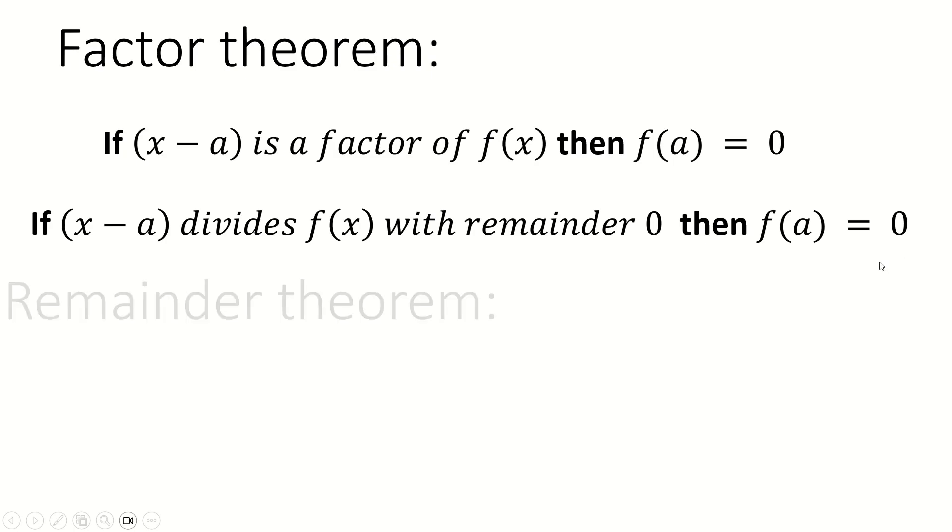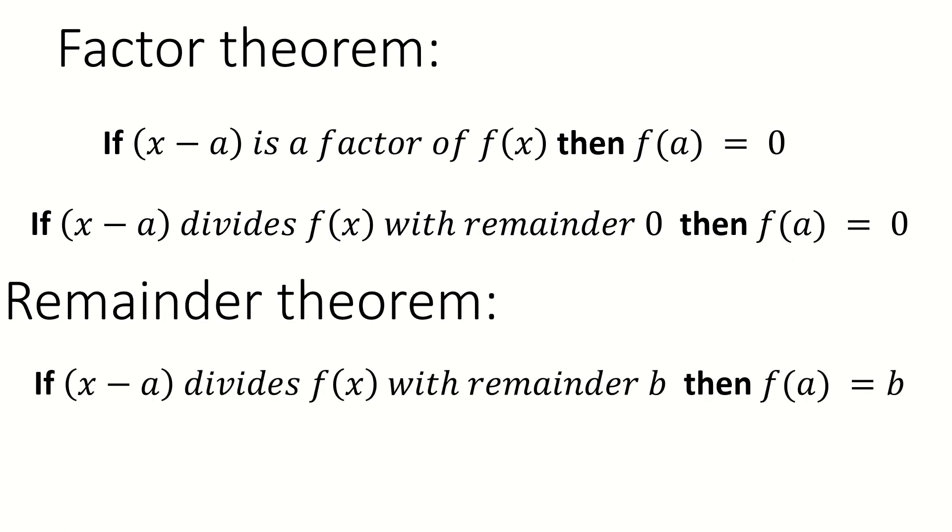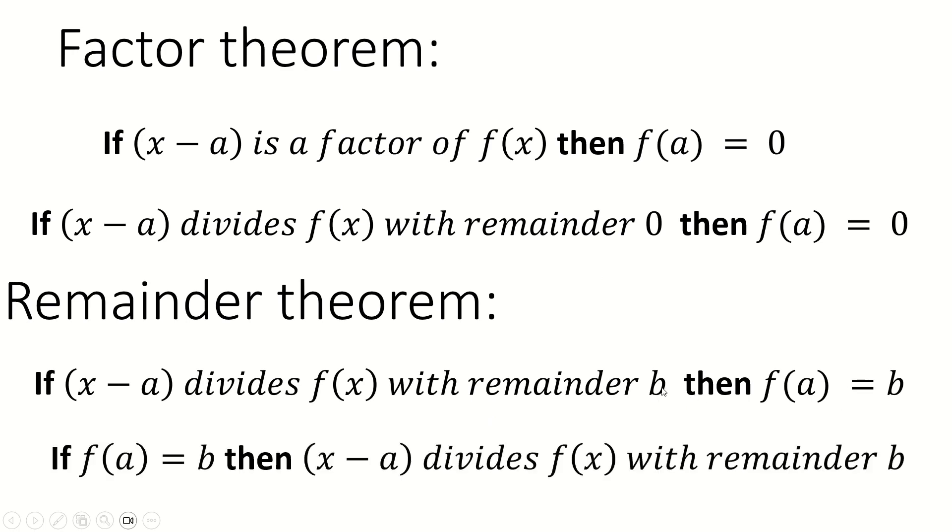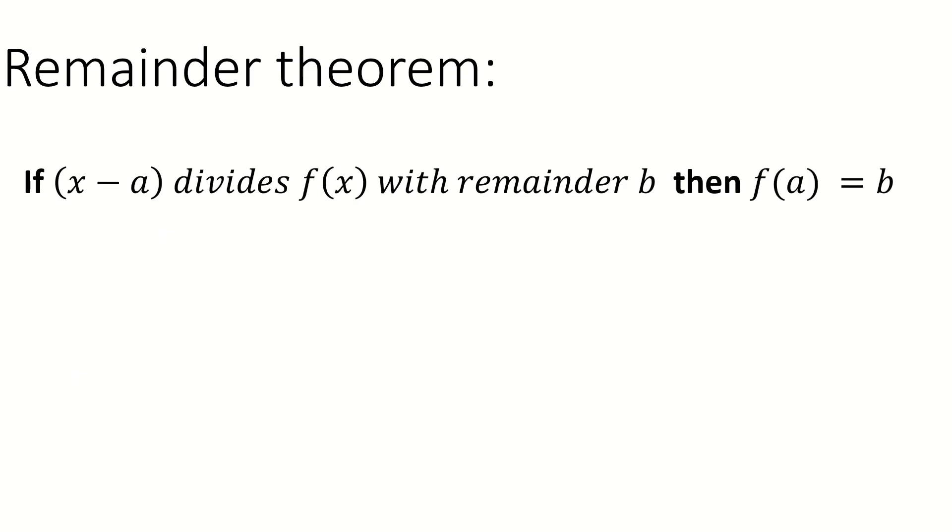But let me introduce you to remainder theorem. Remainder theorem is this except it allows you to do anything you want with these two zeros. So remainder theorem says if x minus a divides f(x) to remainder b then f(a) equals b. It's just a more powerful version of factor theorem. It's the same cosine rule Pythagoras situation where factor theorem is just the very special case where you have zeros here. Remainder theorem is actually saying you're allowed to do this whenever you like with any number here that you want. That makes it much more powerful. It also works both ways around exactly the same way factor theorem does. So let's do some questions where remainder theorem is going to come in handy.